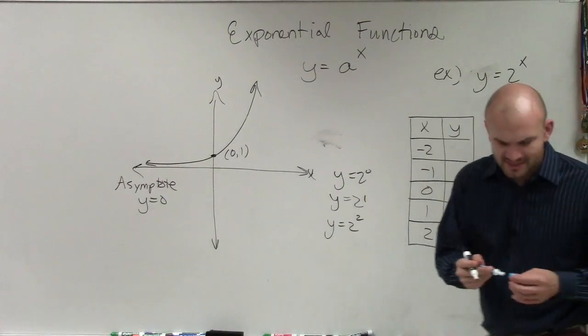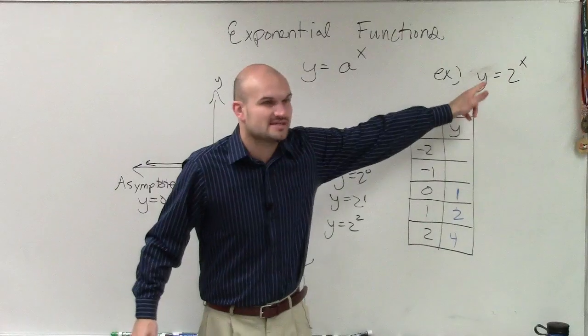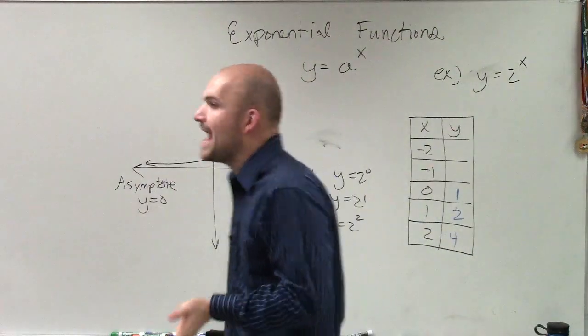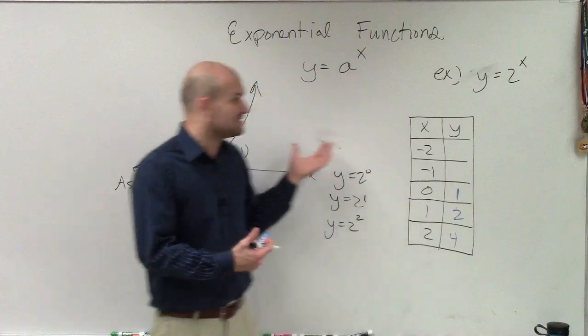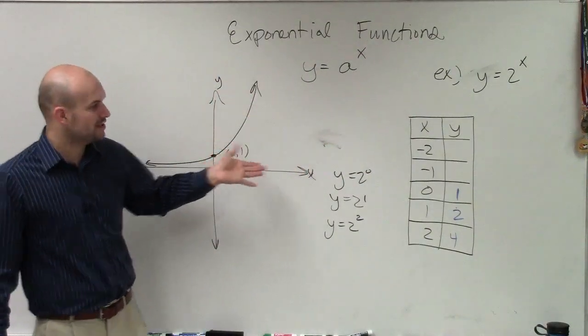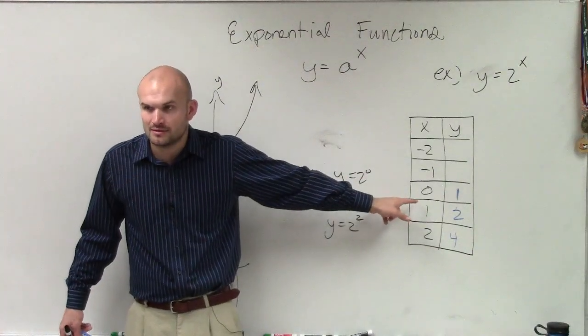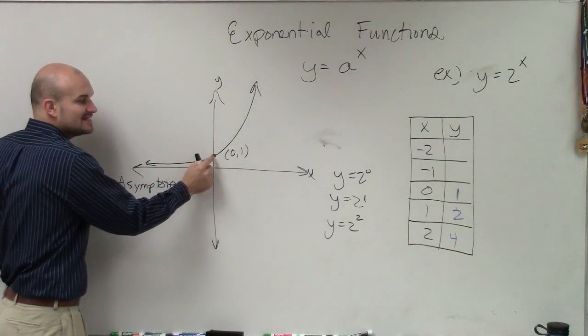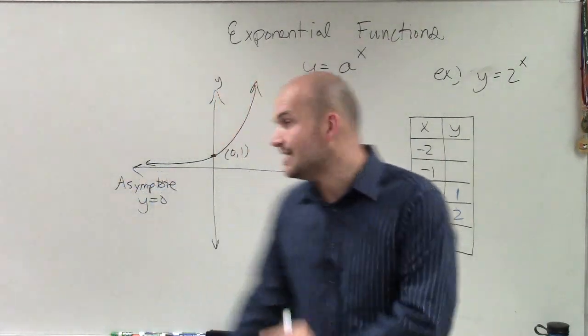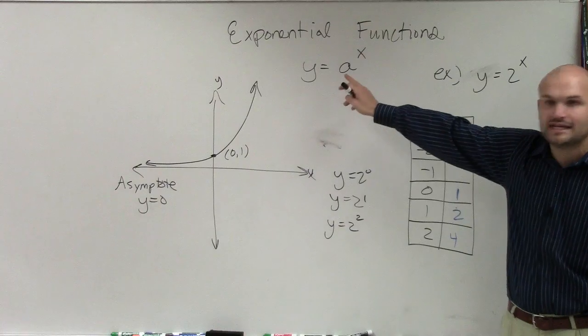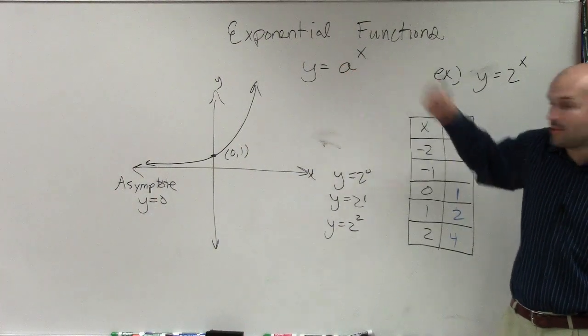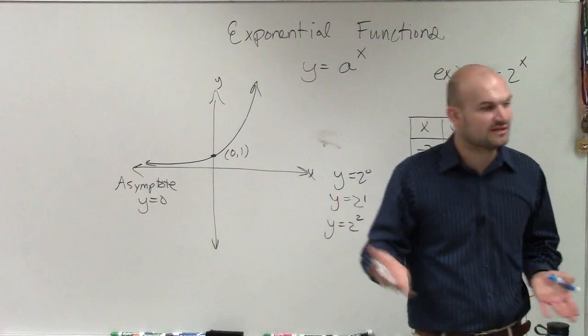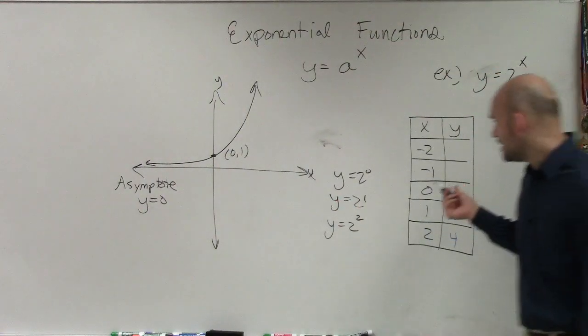And what I want you guys to understand, some of you might say, well, what happens if my base is 10? Because we're going to use a lot of different bases. What happens if my base is 10? What happens if my base is 8? What happens if my base is 1 half? How is that going to change the graph? Well, one thing, it is going to affect how the graph increases. But you guys notice, does it matter what the base is when I raise it to the 0 power? No. So all of my exponential graphs, unless we have a transformation, are going to have a y-intercept at 0, 1.